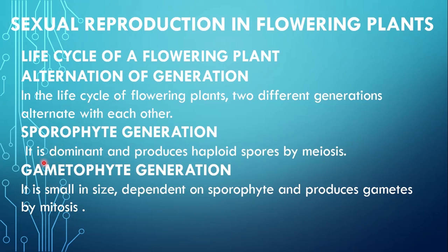Sporophyte generation is dominant and produces haploid spores by meiosis. Sporophyte generation mostly dominant aur independent hoti hai, aur is mein sporophyte meiosis ke process ke zariye haploid spores banata hai. Gametophyte size mein small hota hai. Yeh food, protection aur development ke liye sporophyte pe dependent hota hai, aur mitosis ke process ke zariye gametes produce karta hai.